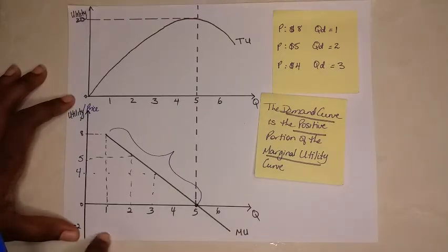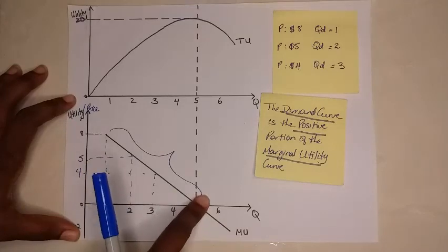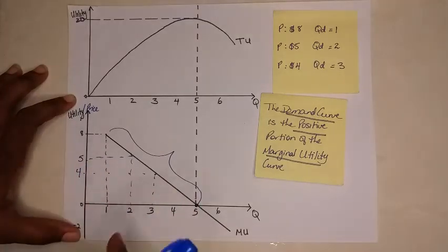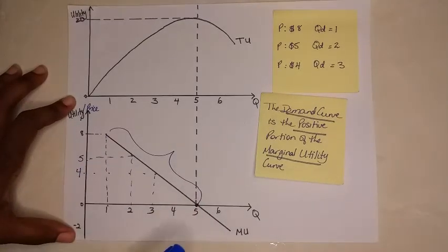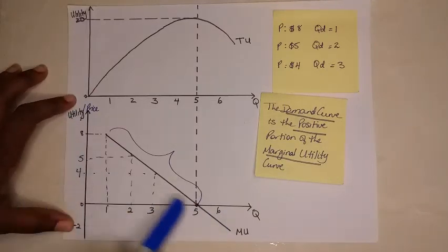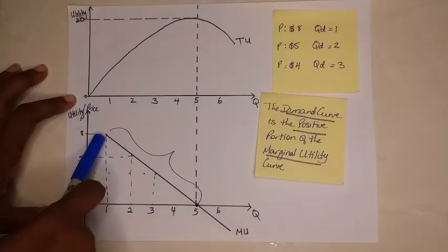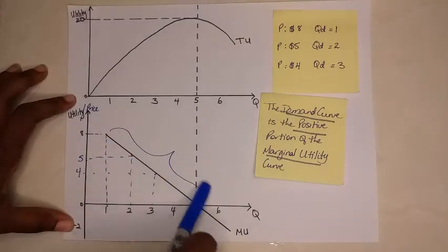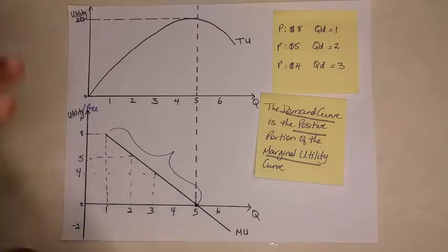So this is how we would get our demand curve. Remember, it doesn't make sense to consume where we would have negative utility. So we don't include the negative portion of the demand curve here, of the MU curve, sorry. So the demand curve is really just this positive portion here. And that is how you derive the demand curve from using the marginal utility theory.